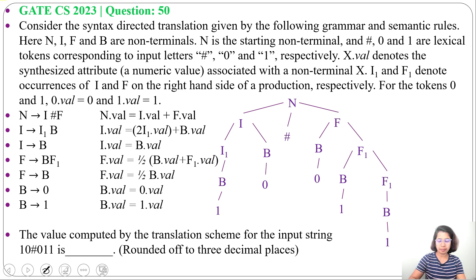Now, 1 value will pass to B value. So, B value equals 1. Then, this B value will be I value. So, I value will be 1. Here, this 0 value will pass to B value. B value will be 0.